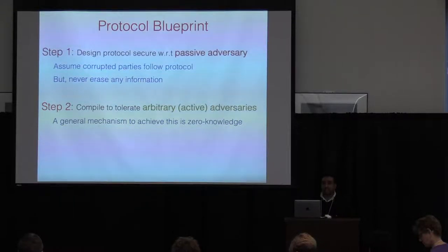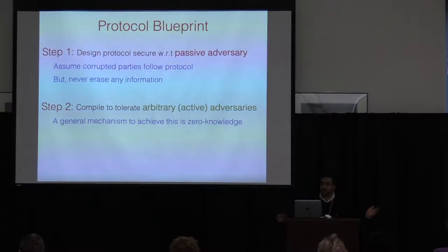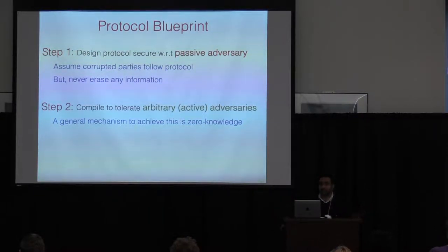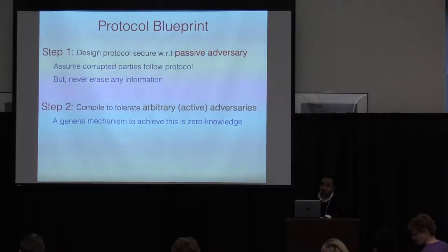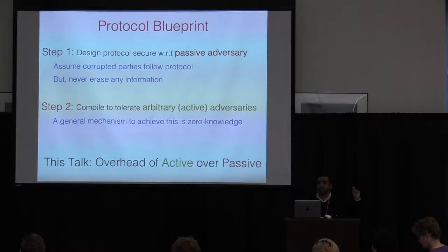We are all familiar with this blueprint in crypto. If you want to construct a secure computation protocol, you start with something that is secure against a passive adversary, and then you boost security against malicious parties. This talk is primarily about understanding what it takes to do that second step — what is the overhead of getting active security from a passively secure protocol.